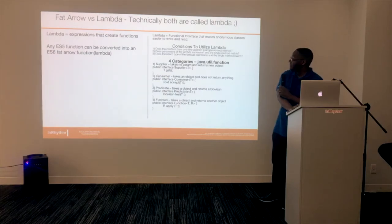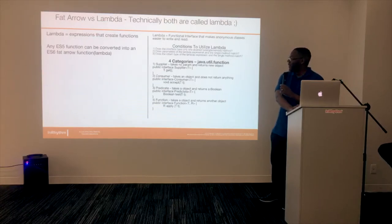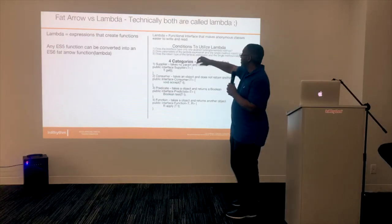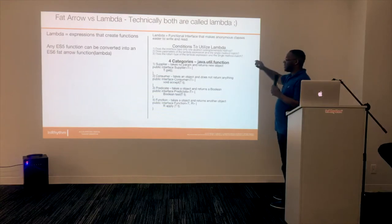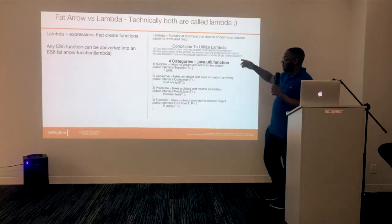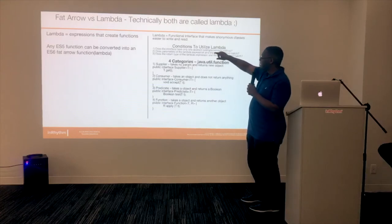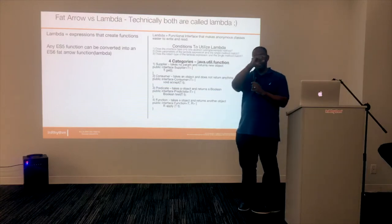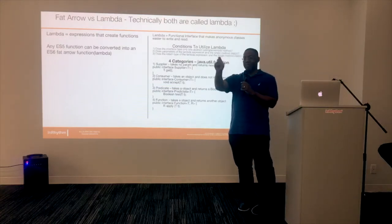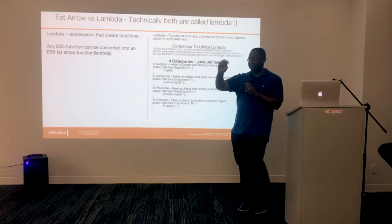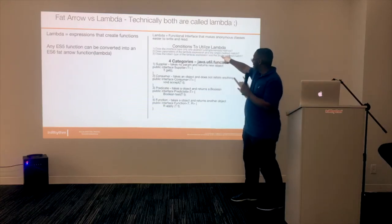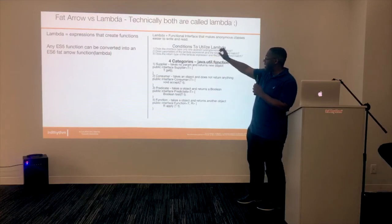Fat arrow functions versus lambdas. In JavaScript, any ES5 function can be converted into a fat arrow function. In Java, it's a bit more involved — a lambda has requirements. To utilize a lambda function, there has to be an interface that has one abstract, unimplemented function. It will just have the public keyword, the function name, the parameters, and the return type — no body. The lambda expression's parameters and return type must both match the interface.